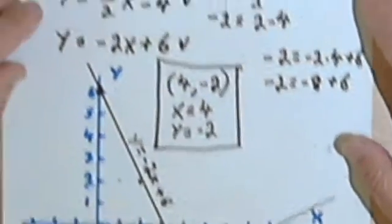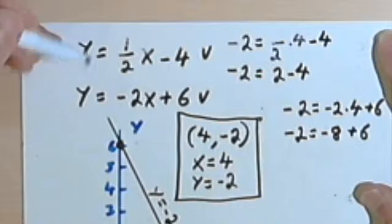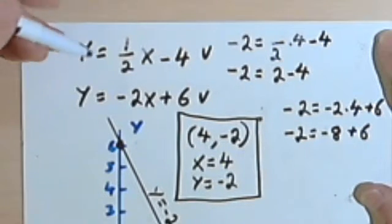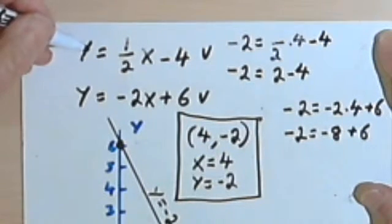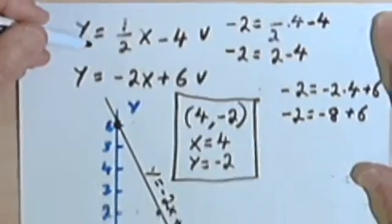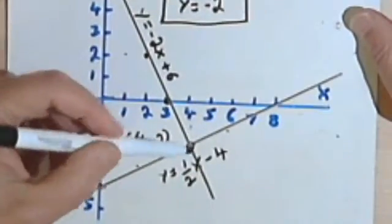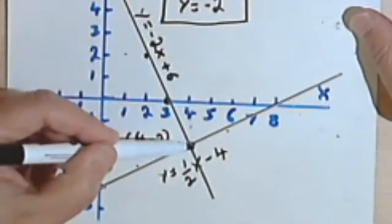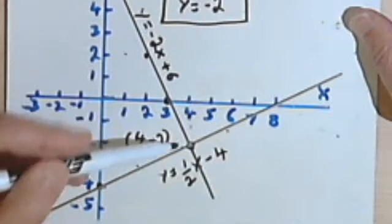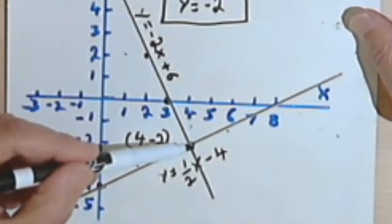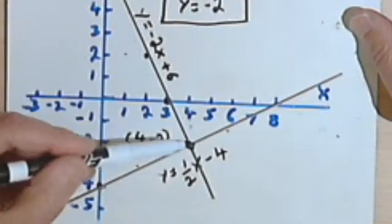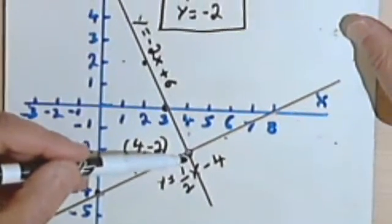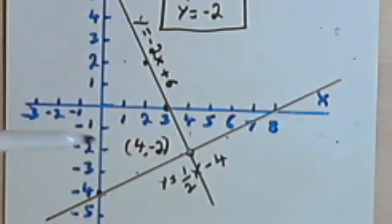So that's all there is to it. Once again, you're given a pair of equations, a system of two equations, and you're told to solve by graphing. You graph both equations, find the point where they cross, and the x value and the y value for that point will be your solution. So that's it for now. Take care. I'll see you next time.